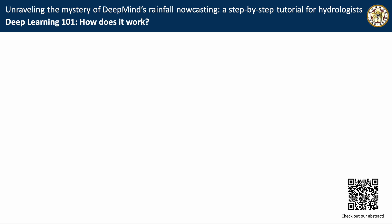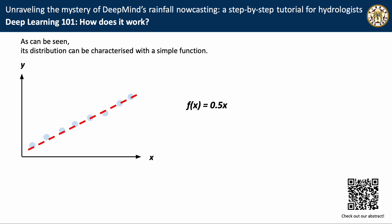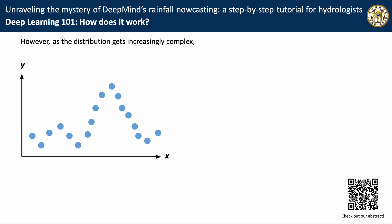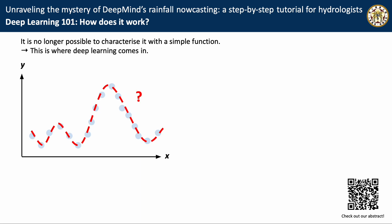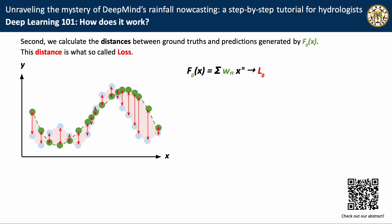How does deep learning work? Assume a simple data set. The data's distribution can be characterized with a simple function, but when the distribution gets more complex, it becomes more difficult to express this distribution. This is where deep learning comes in. In deep learning, we first design a complex function with random weights initially, then we attempt to generate predictions with this function and calculate the distance between ground truth and predictions.